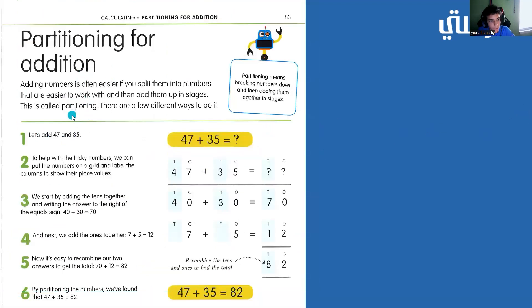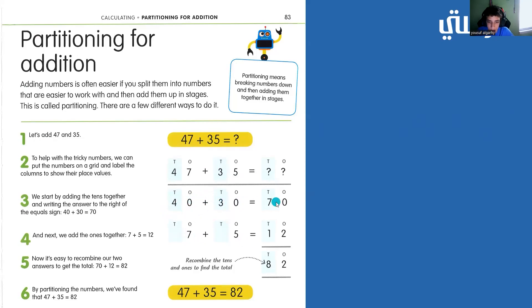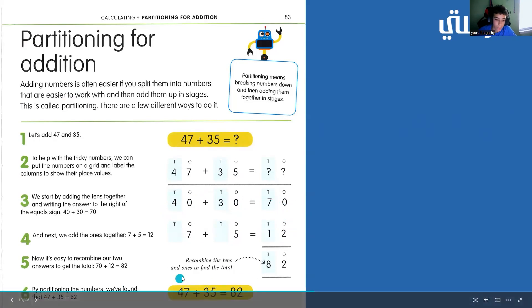All right, now we have partitioning for addition. Let's add 47 and 35. We have the equation 47 plus 35. What we can do is break it down to 40 plus 30 and 7 plus 5. So, 40 plus 30 equals 70, and 7 plus 5 equals 12. Then all you have to do is add those two together: 70 plus 12 equals 82. So, 47 plus 35 equals 82.